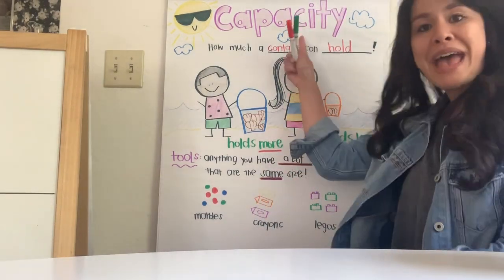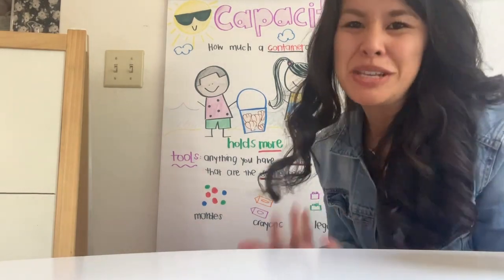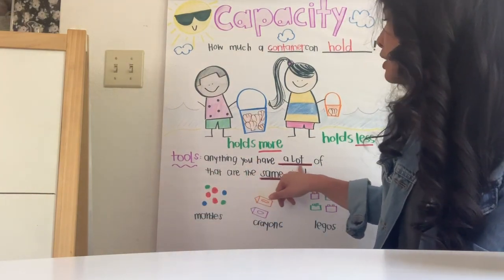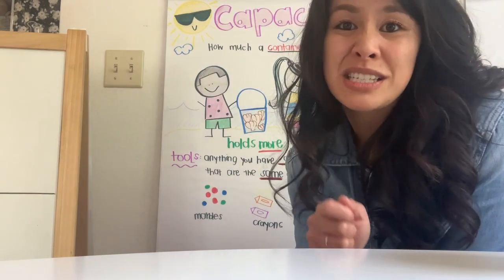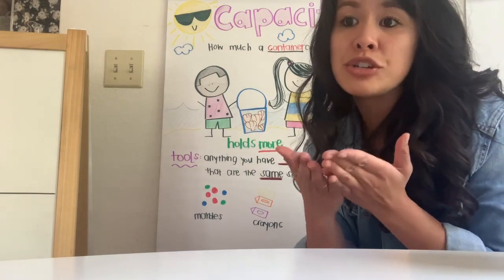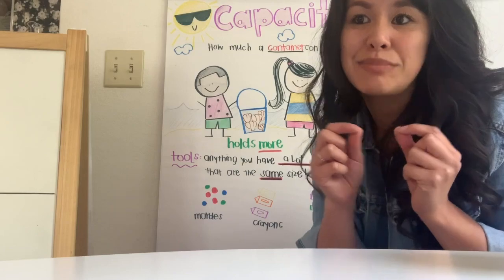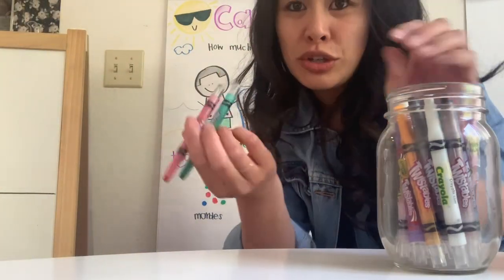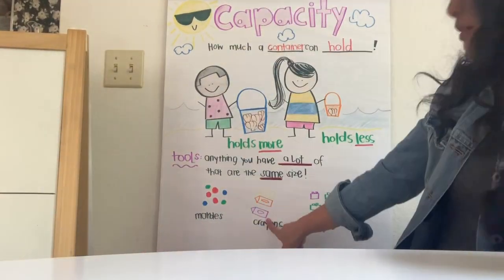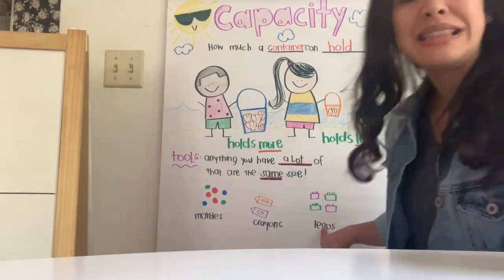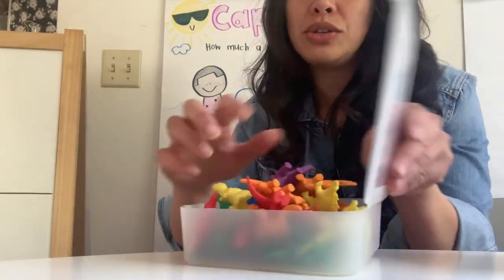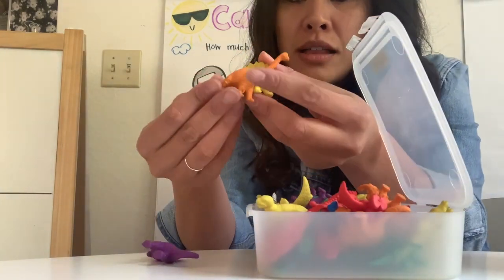In order to measure capacity, there are some tools we can use. You can use anything that you have a lot of. But here's something really important: the things you use to measure must all be the same size. I have a lot of crayons and they're all the same size — I could use crayons. You could use pom-poms, marbles, or even Legos, because you probably have a lot and they're the same size. Today I'm going to use these dinosaurs because I have a lot of them and they're all the same size.